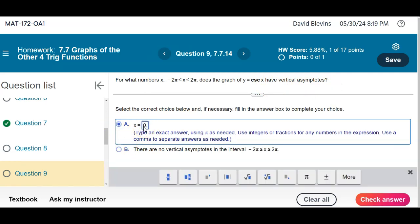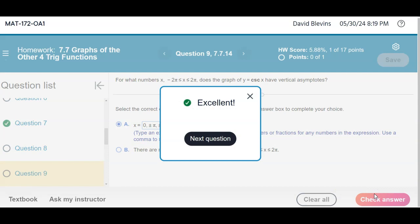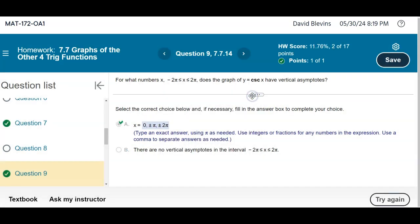So zero, there's this plus and minus button. Let me see if it actually works. Plus and minus pi, and then plus and minus two pi. I'm going to check and see if that works. Yep, it does. So positive and negative pi, positive and negative two pi can be done with that plus and minus button.